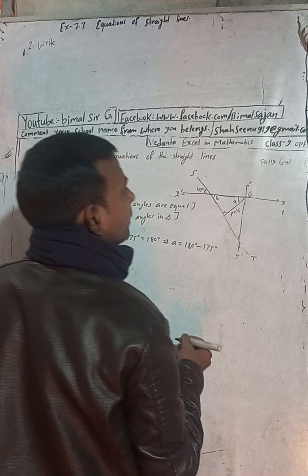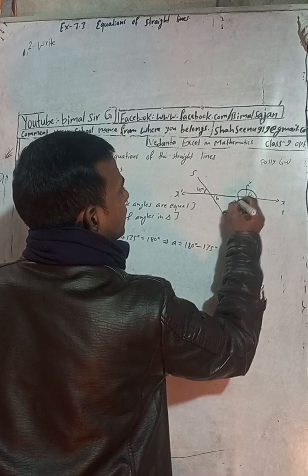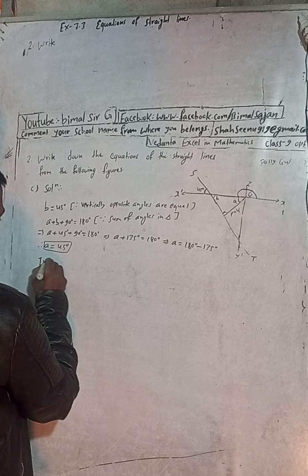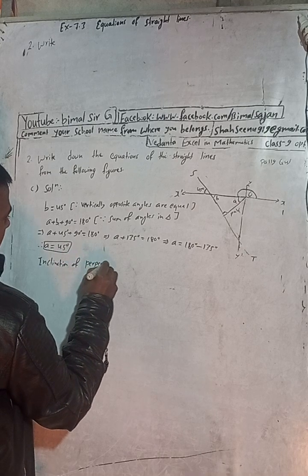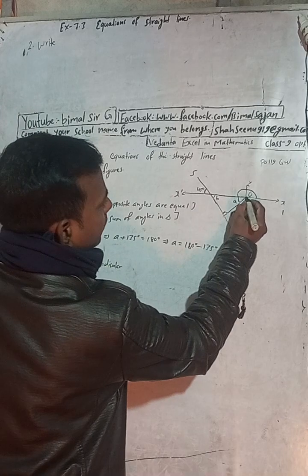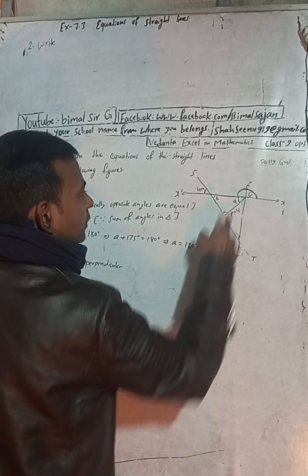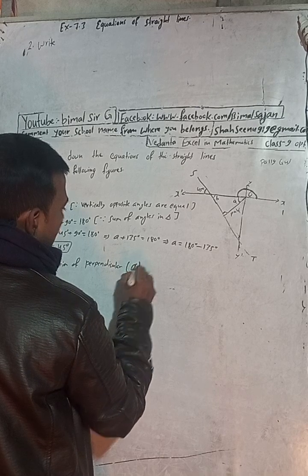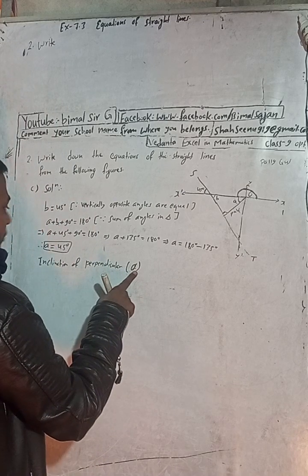But we need the angle measured from the positive x-axis. The inclination of the perpendicular is measured from this axis anti-clockwise. This is up to 180 degrees and this is 45 degrees more, so alpha equals 180 plus 45. Be careful — alpha is the inclination, and A is this 45-degree angle.